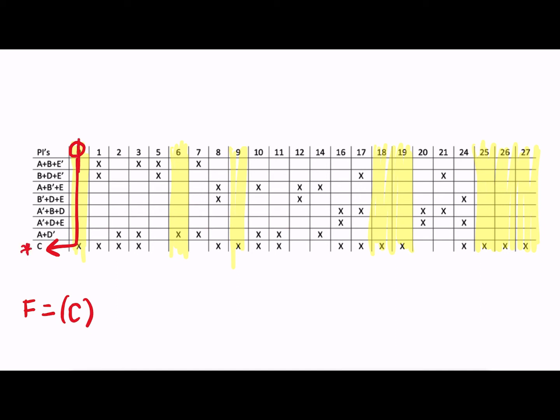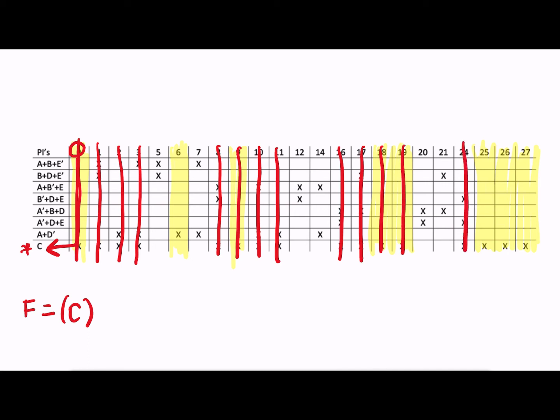So I know that C is going to be included in my expression. C gets a lot of max terms out of the way for me. So 0, 1, 2, 3, 8, 9, 10, 11, 16, 17, 18, 19, 24, 25, 26, and 27. So that was a nice, very efficient prime implicant for us.